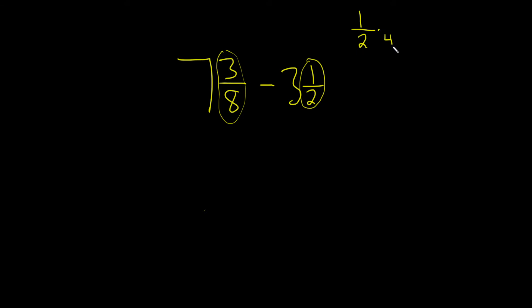So that number is 4. But then you can't really just multiply the bottom by 4. You have to multiply the top by 4 also. You're essentially just multiplying by 1 because these cancel. So this is equal to 1 times 4 is 4, 2 times 4 is 8. So we can write this as 7 and 3 eighths minus 3 and 4 eighths.